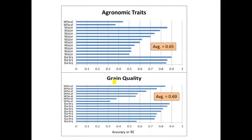For agronomic traits in maize, barley, and wheat, the average relative efficiency is about 0.65, and for grain quality it's a little higher at about 0.69. These traits tend to be more heritable, leading to higher accuracy of genomic selection and looking more favorable compared to phenotypic selection. However, one cycle of genomic selection is still predicted to be not as good as one cycle of phenotypic selection even for these traits.